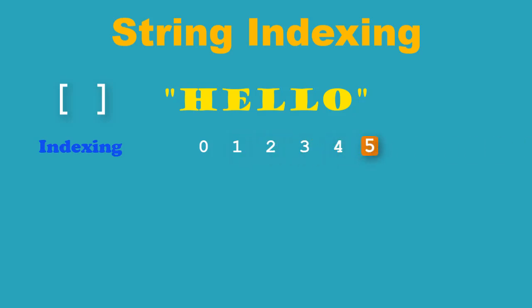Python also allows negative indexing, wherein the last element can be obtained by writing minus one, followed by minus two for second last, and so on, as shown in this example here.